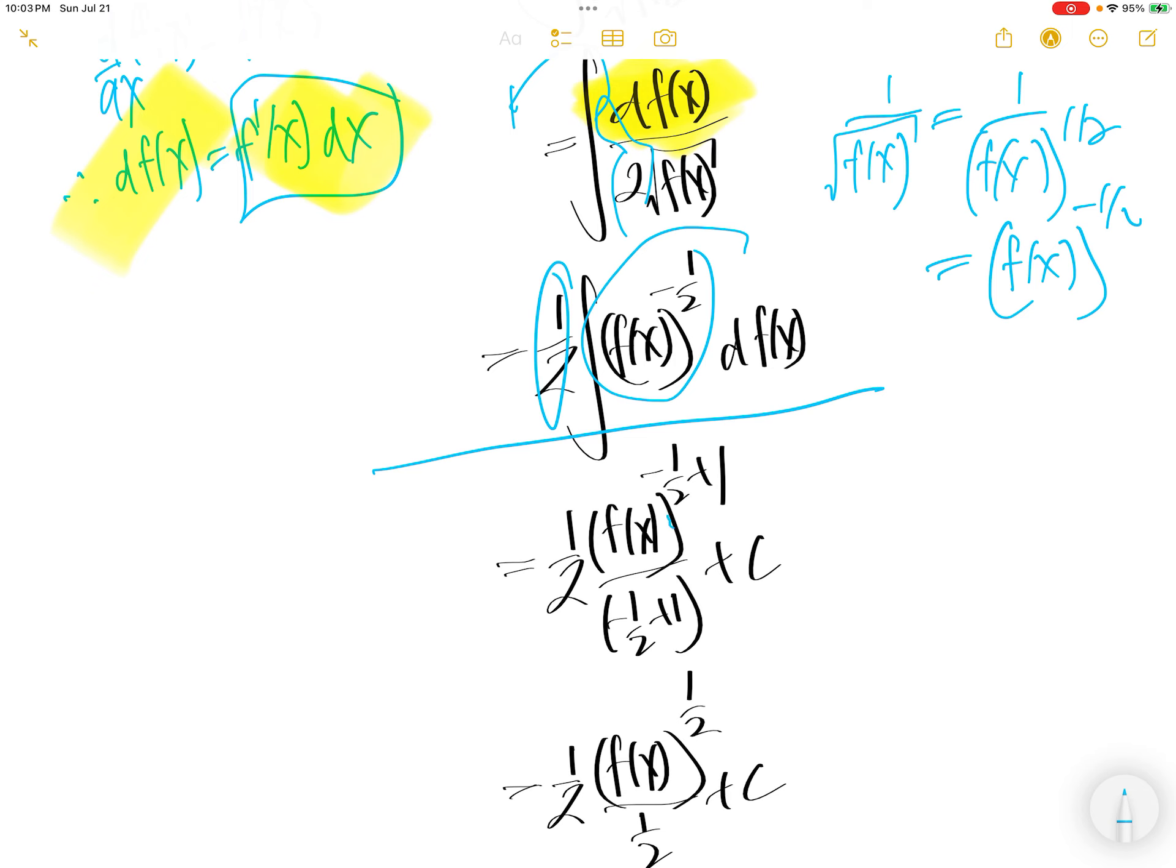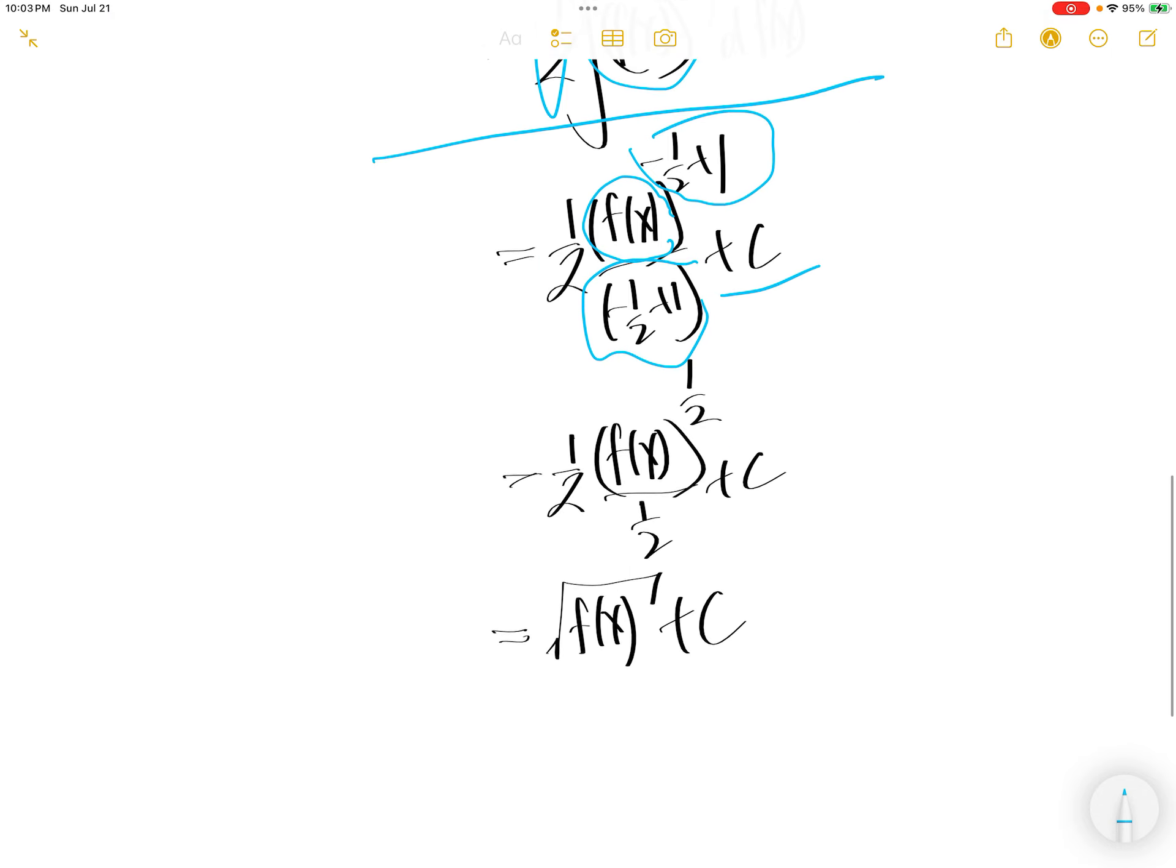Now, the integral of this is a simple integral. It would be f of x to the power of negative half plus 1 divided by the same exponent plus c.